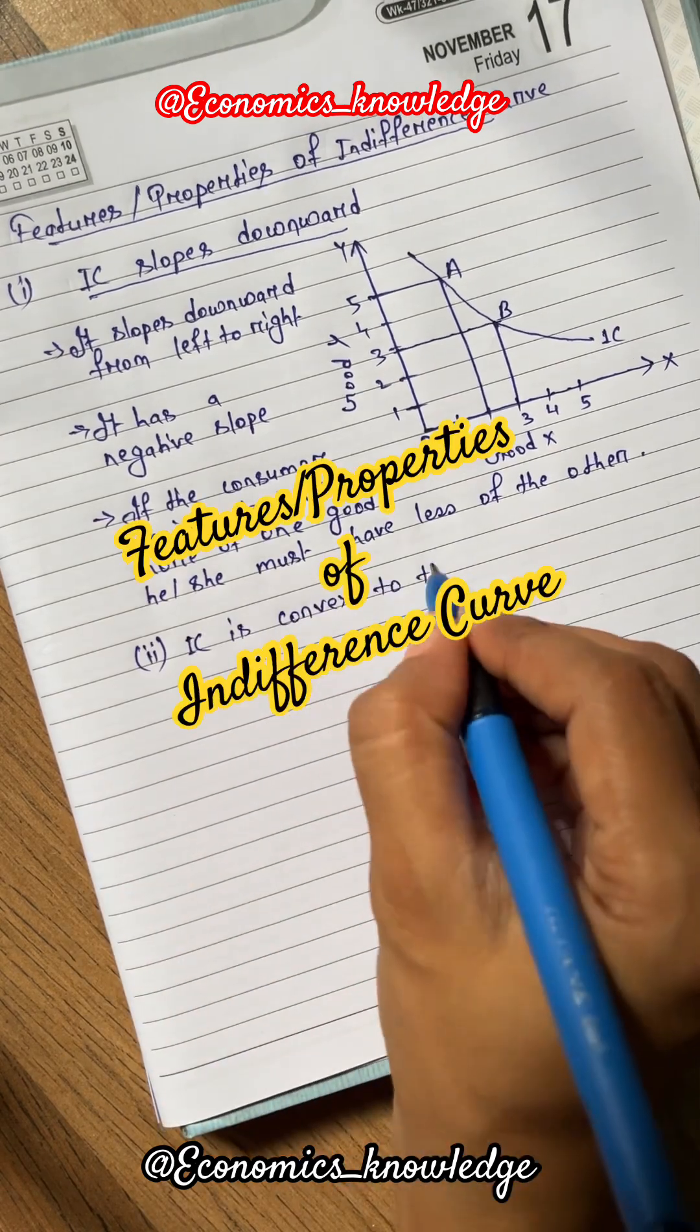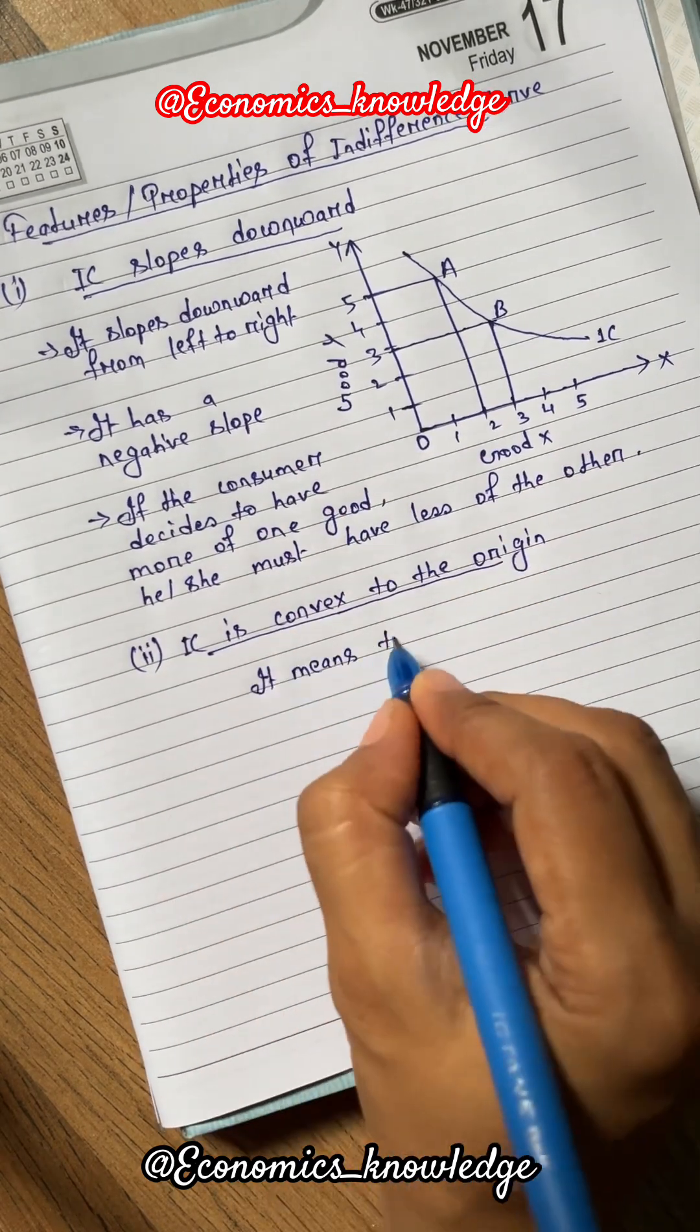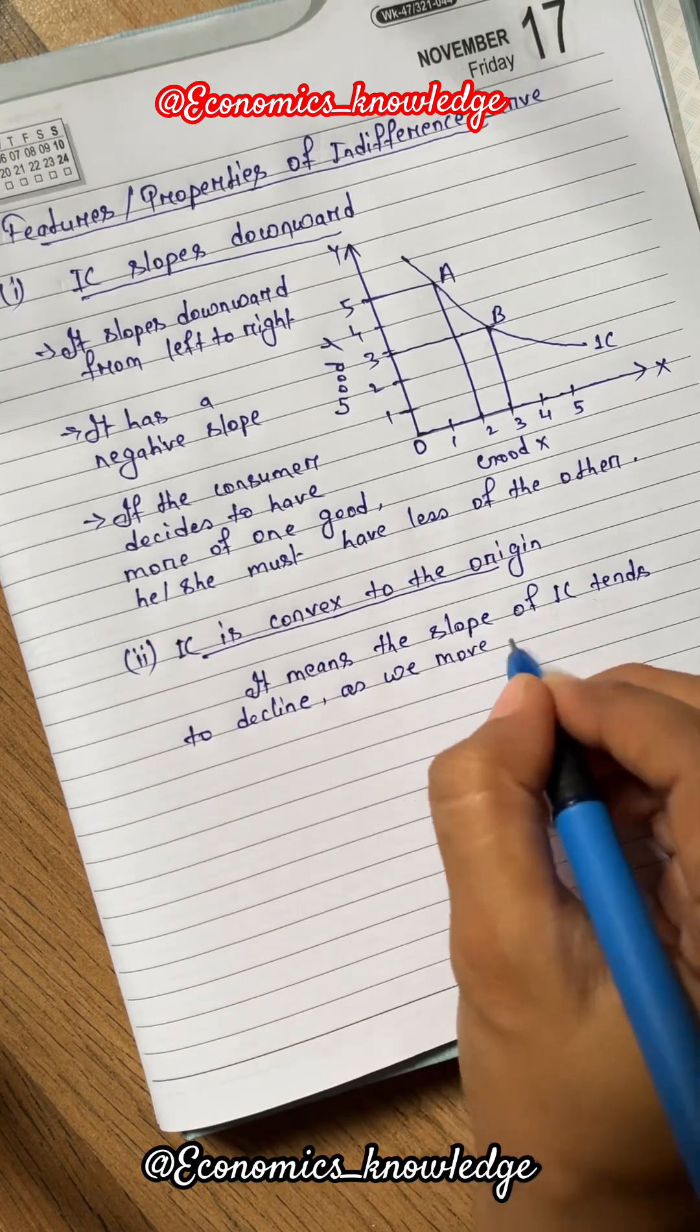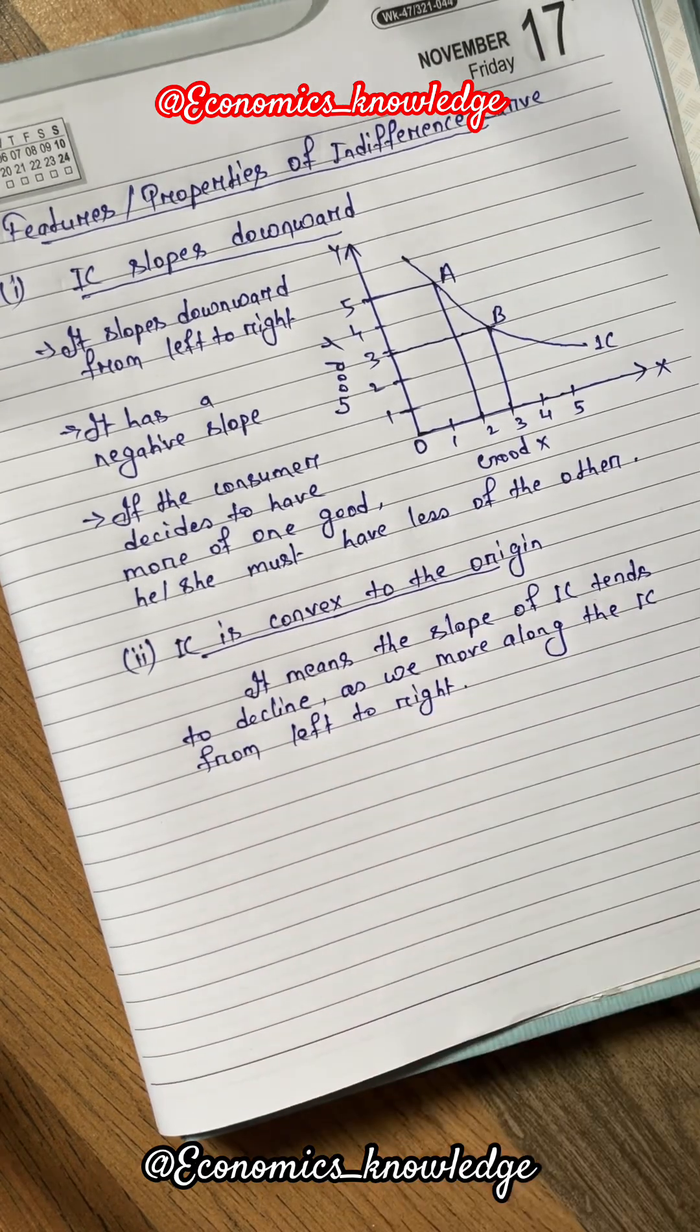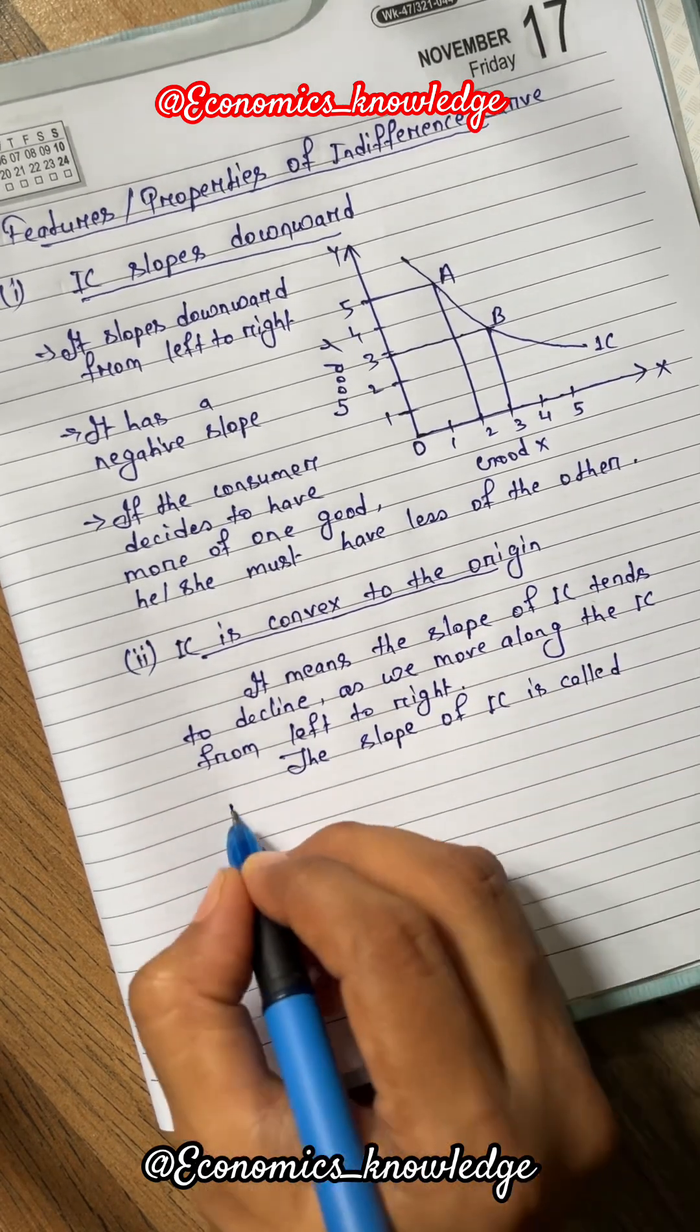The second feature of indifference curve is that it is convex to the origin. It means the slope of IC tends to decline as we move along the IC from left to right. The slope of IC is called marginal rate of substitution.